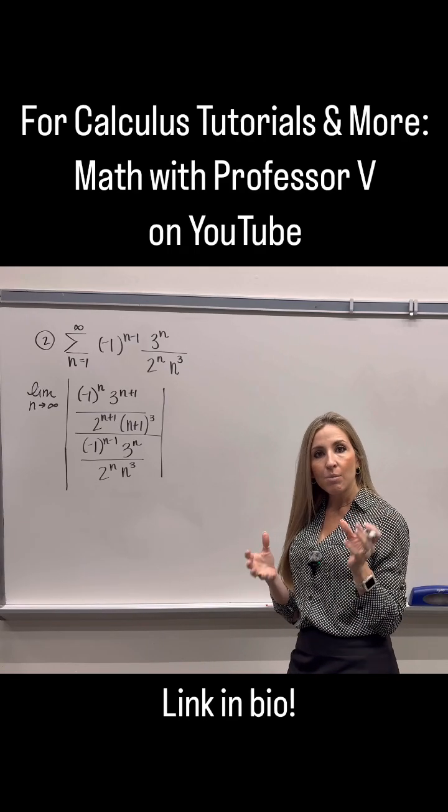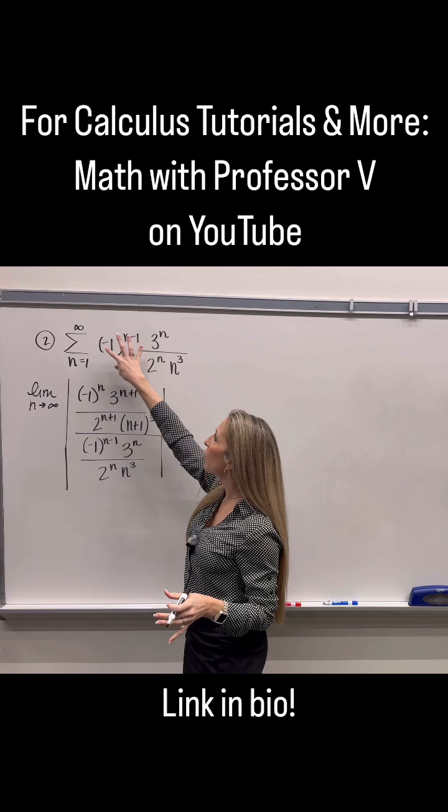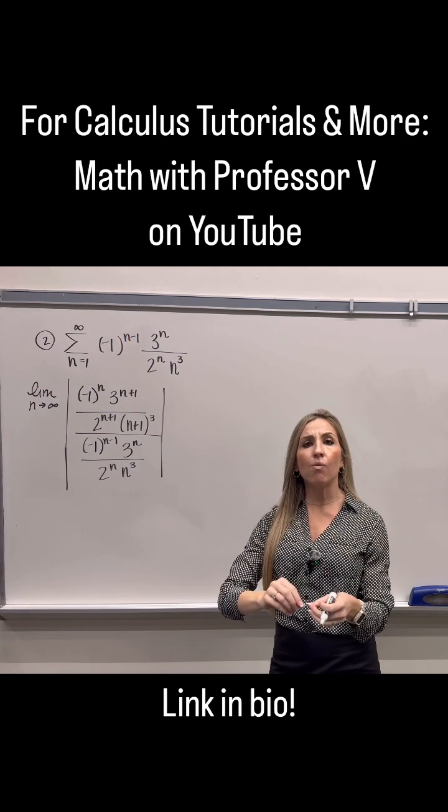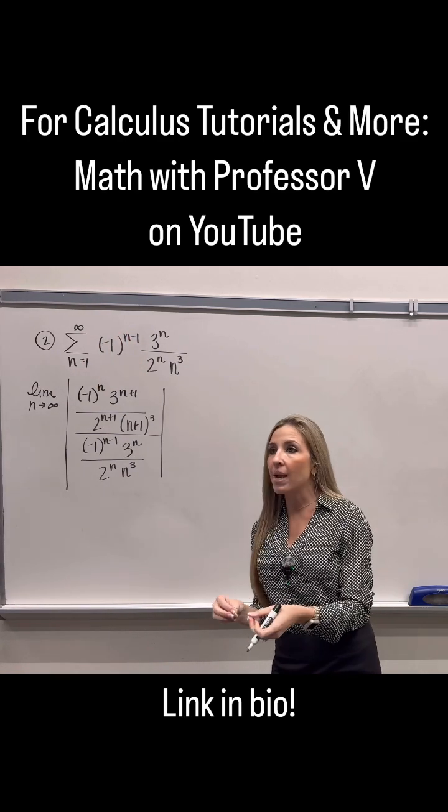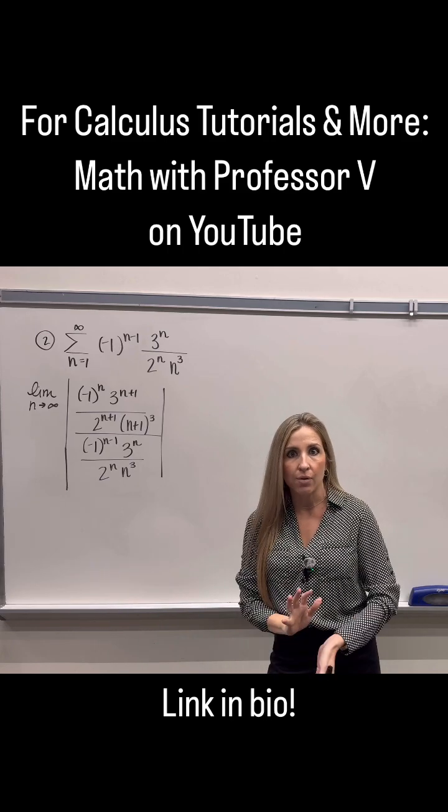Now, any time you're applying the ratio test and you've got this alternating portion, so when you have negative 1 to the n, negative 1 to the n minus 1, negative 1 to the n plus 1, that makes your series alternate, right?